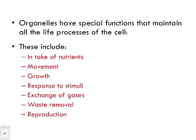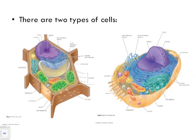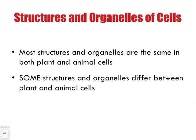Two types of cells: plant cell and animal cell. One of the most unique differences is that animal cells are rounded, while plant cells are more brick-shaped with straight edges. Most structures and organelles are the same in both plant and animal cells, but some organelles actually differ — some are found only in plant cells, and some are found only in animal cells.